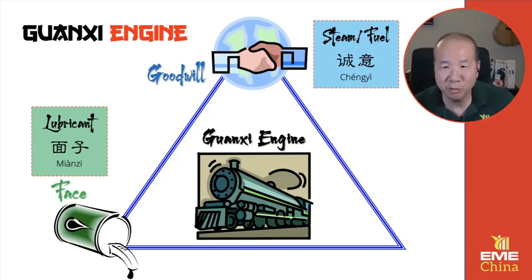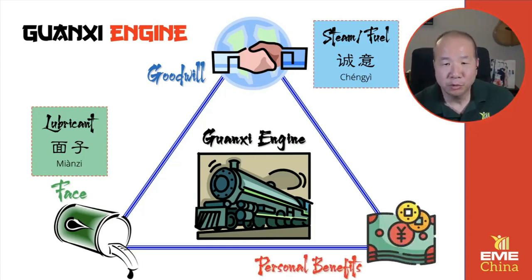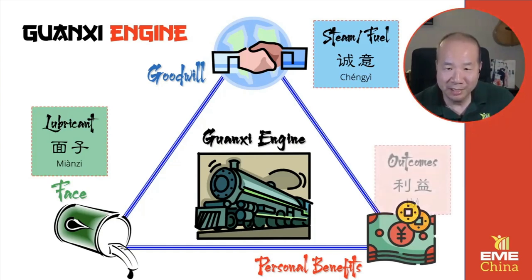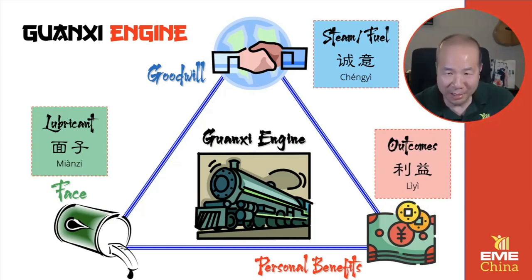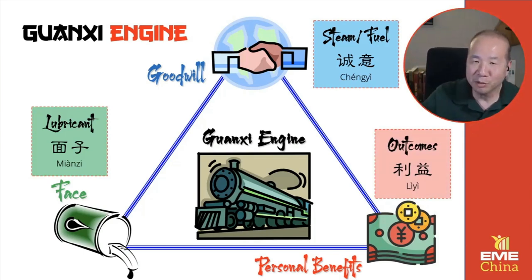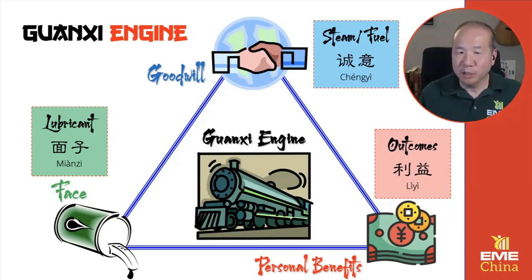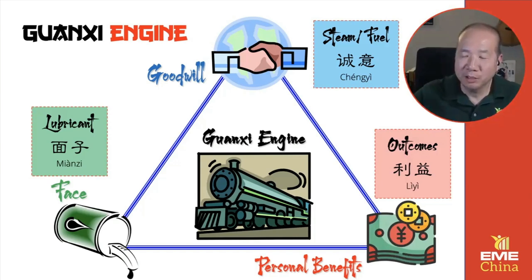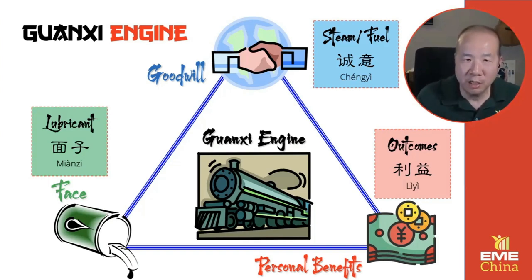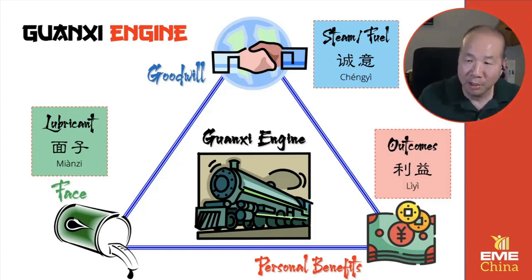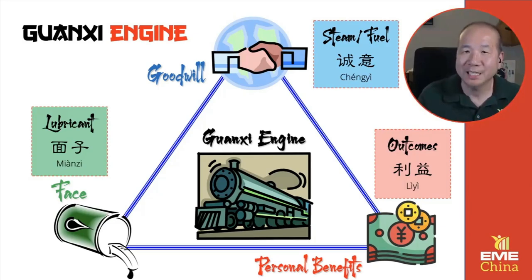Next is personal benefits — 利益 (lì yì). The outcomes, or destinations, are the personal benefits. The Guanxi Engine is an engine that can take you somewhere, and the destinations are the outcomes. This triangle — the lubricant, the fuel, and the destinations — this is the Guanxi Engine. If you understand the components to keep your engine lubricated and running, you will reach more destinations, more outcomes, and achieve more personal benefits.